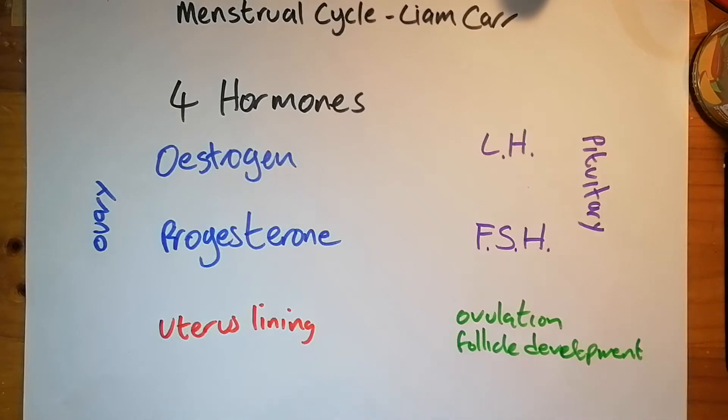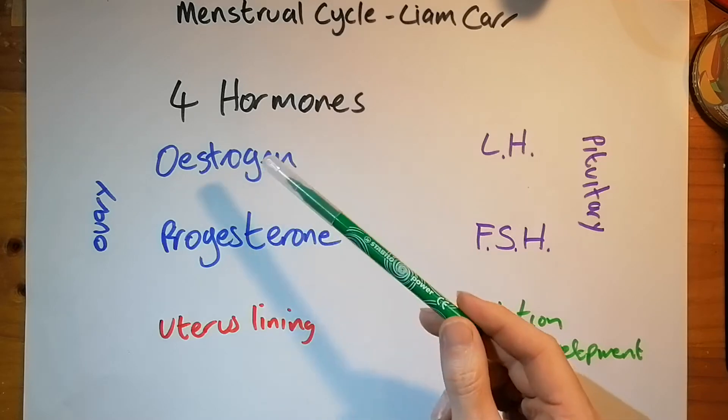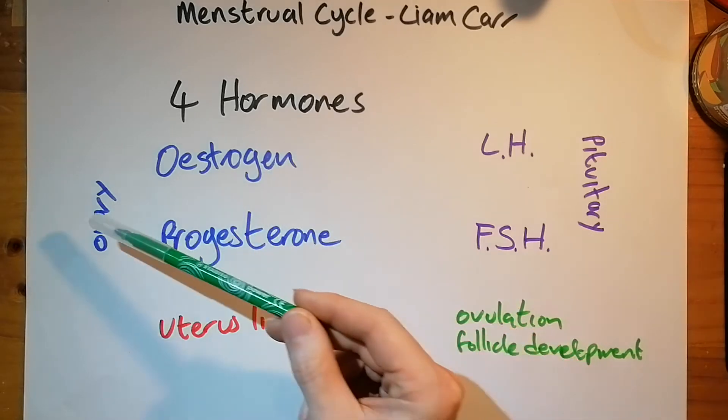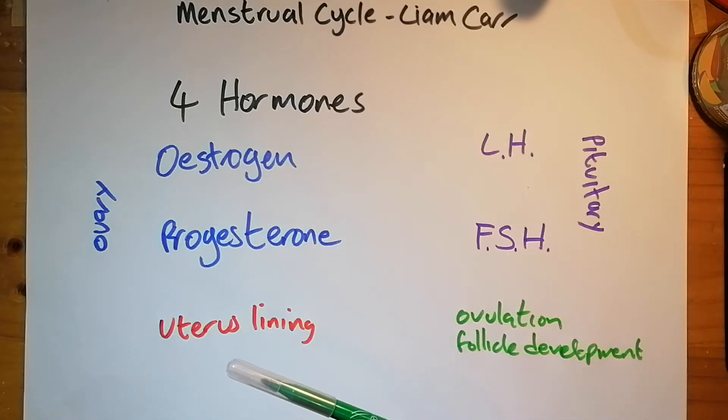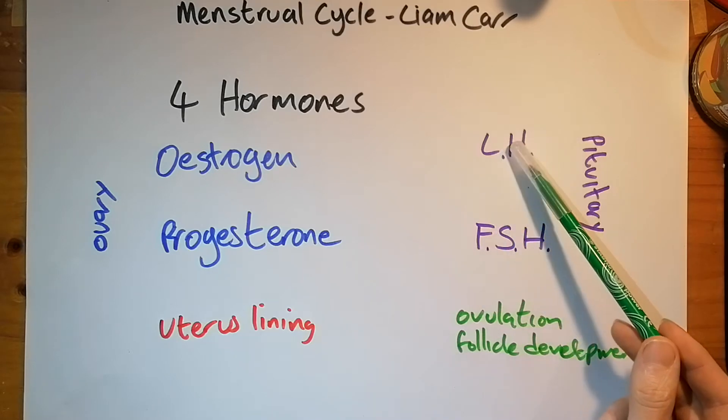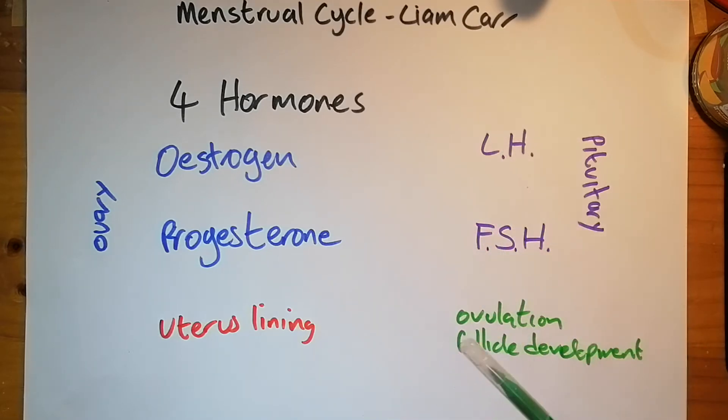And LH and FSH, they control ovulation and follicle development. So you can see already that there are four hormones but they have different target organs. LH and FSH come from the pituitary and they control ovulation and follicle development.